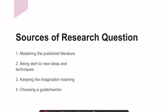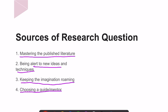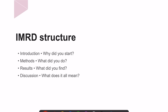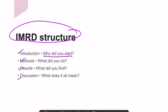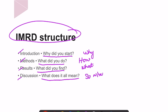Sources of a research question include mass-published literature, being alert to new ideas and techniques in the scientific community, keeping imagination active, and choosing a guide or mentor. In manuscript structure, the IMRAD structure covers introduction, methodology, results, and discussion. A useful mnemonic: introduction answers 'why', methods answers 'how', results answers 'what', and discussion answers 'so what'. Introduction should move from broad to specific, covering background information, current knowledge, knowledge gaps, rationale for the study, and objectives.